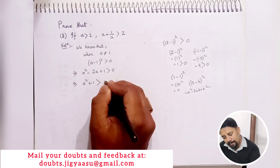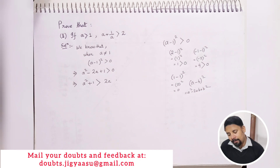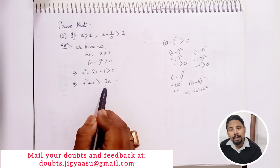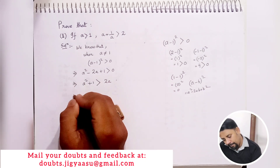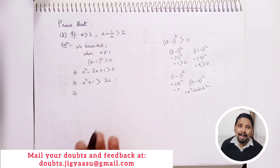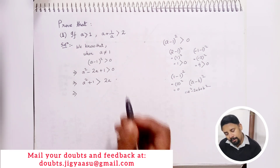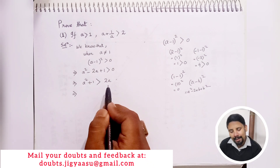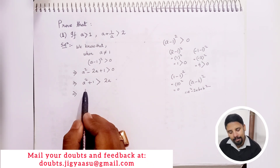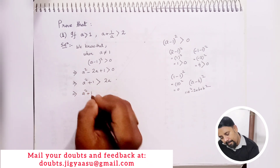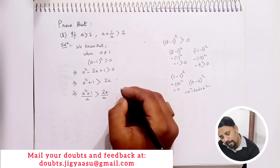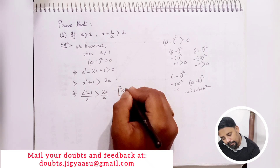Now if we look closely at what we are required to prove, we have 2a on the right-hand side. Using the properties of inequality, we can divide the same value on both sides. In order to get 2, we divide both sides by a. So we have a² plus 1 divided by a is greater than 2a by a.